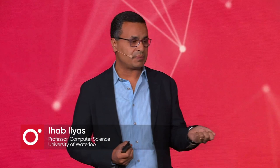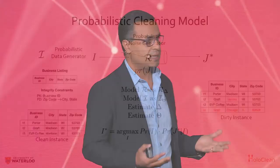This is an example of a table in which I have a schema and a bunch of rules. The generative process will generate a clean instance I. That clean instance goes through a bunch of pollution work — and then you see J*, that polluted version of I.